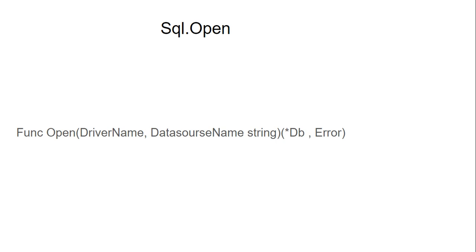The open function has two return values. The first one is the db object value, and the next one is an error. If the connection has any errors, it returns an error value.